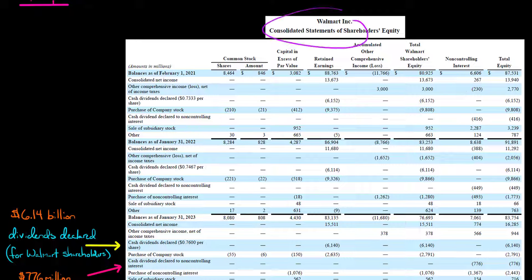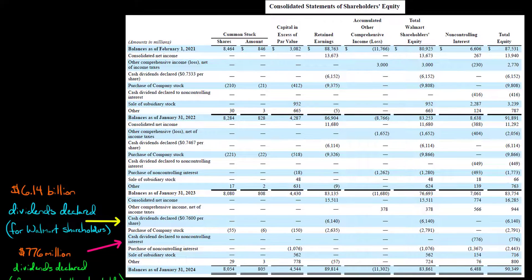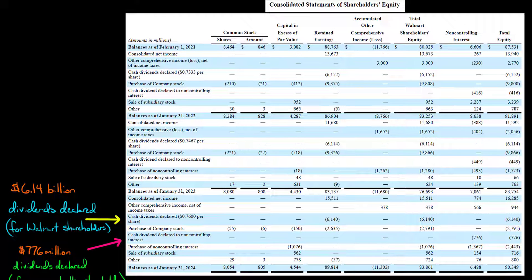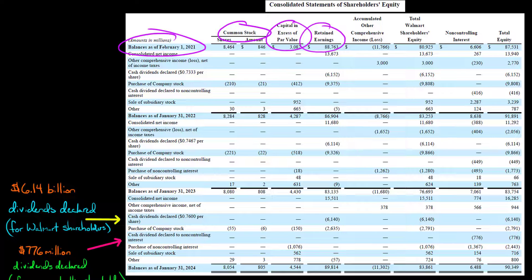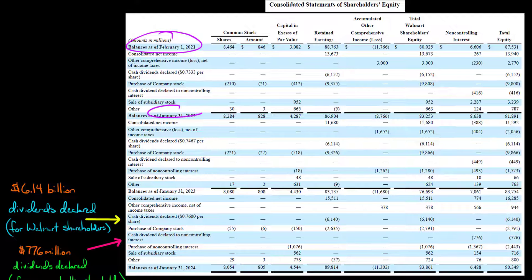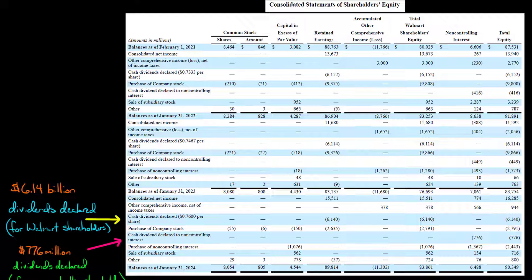Let's start with the statement of stockholders' equity. We have multiple periods here — beginning balances of the different equity accounts: common stock, additional paid-in capital, retained earnings, accumulated other comprehensive income, non-controlling interest, and so forth. We start at the beginning of February 1st, 2021, and the ending balance is January 31st, 2022. I'm going to focus on the most recent period, with balances as of January 31st, 2023.